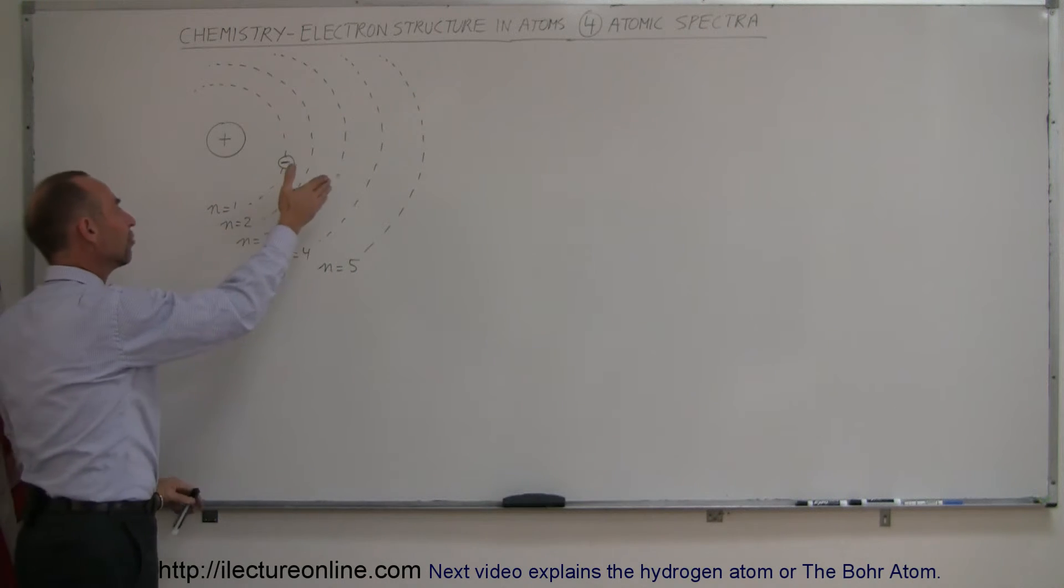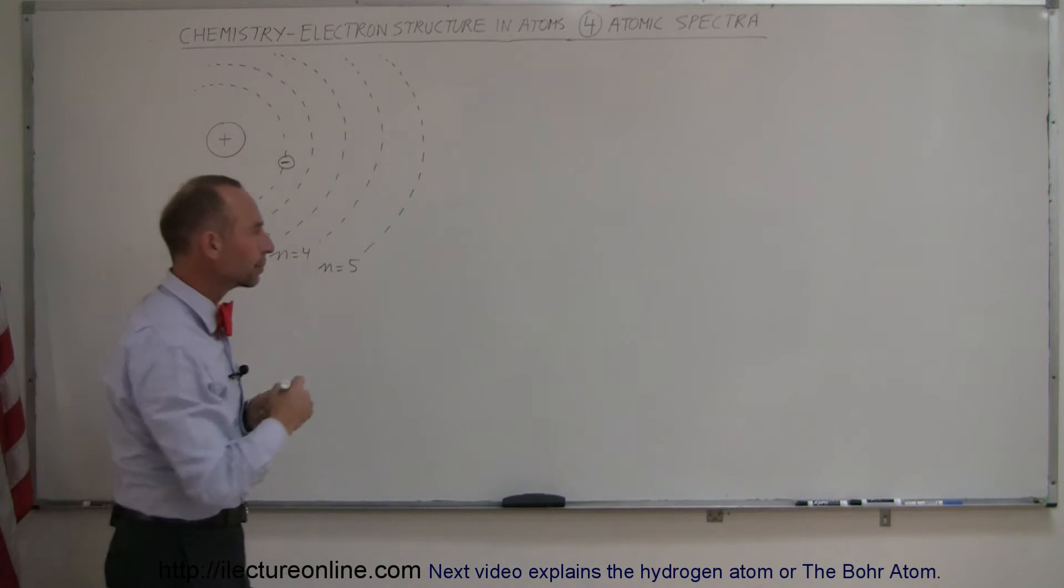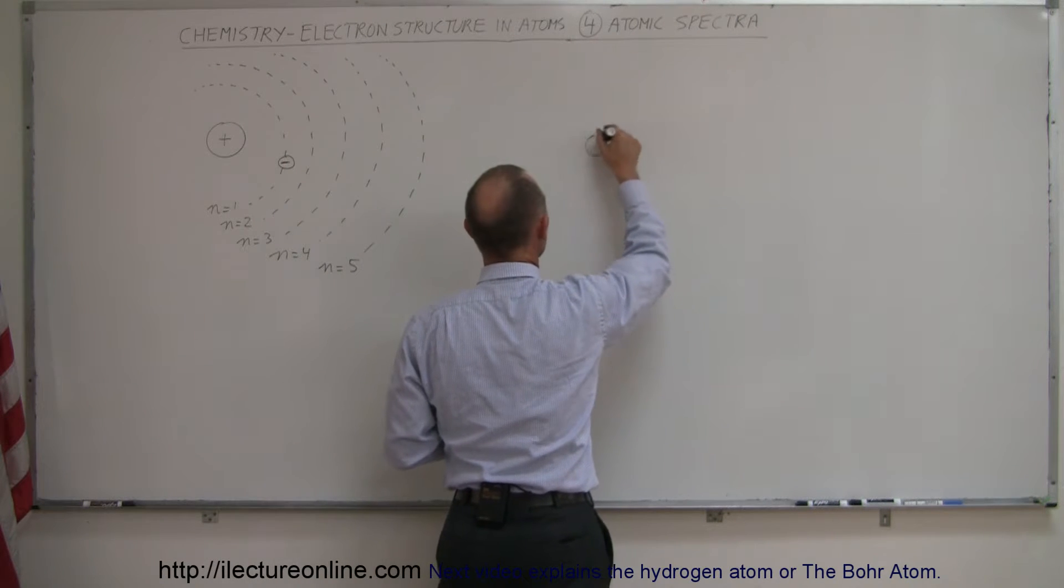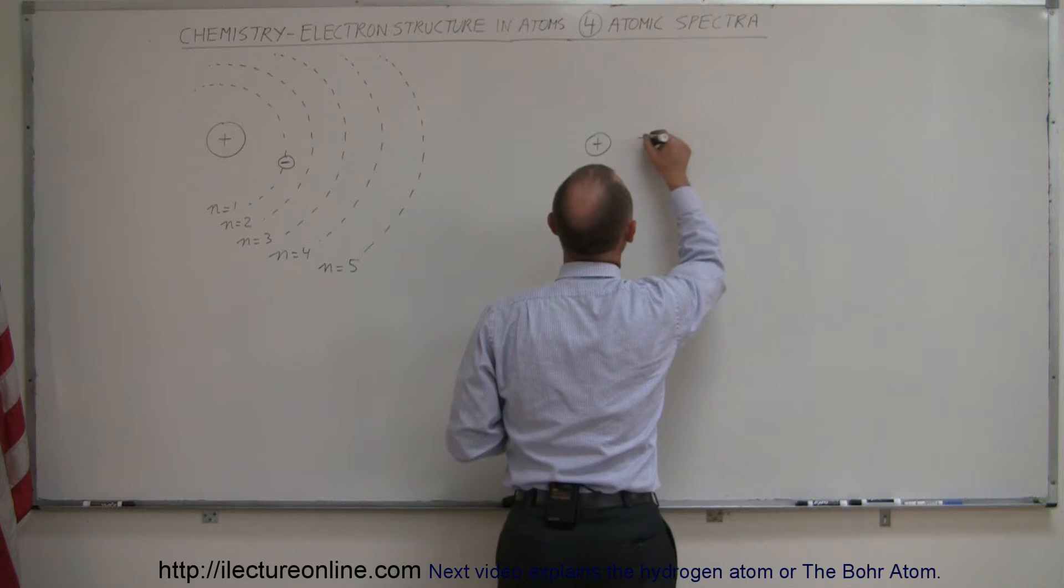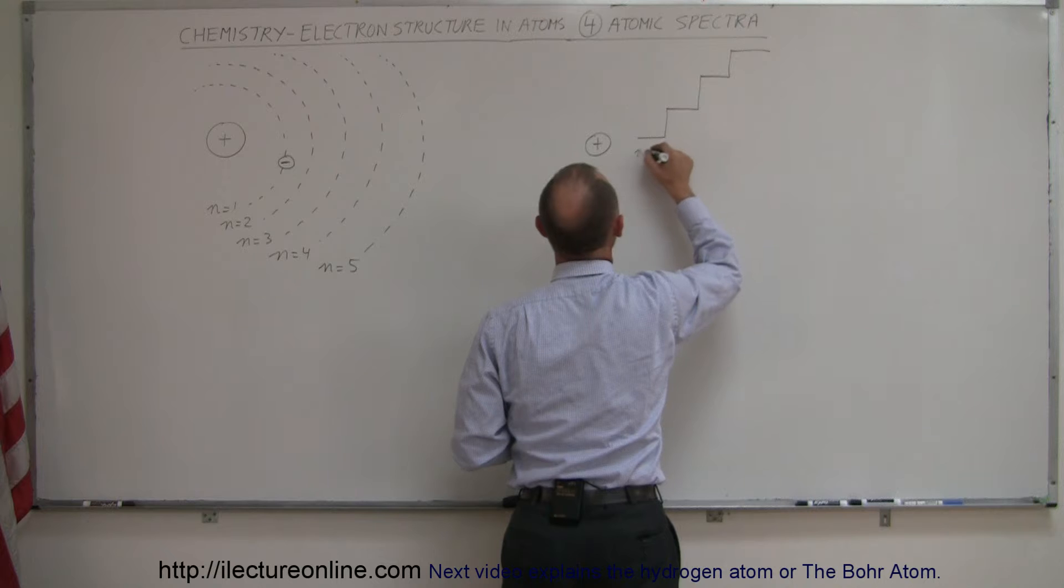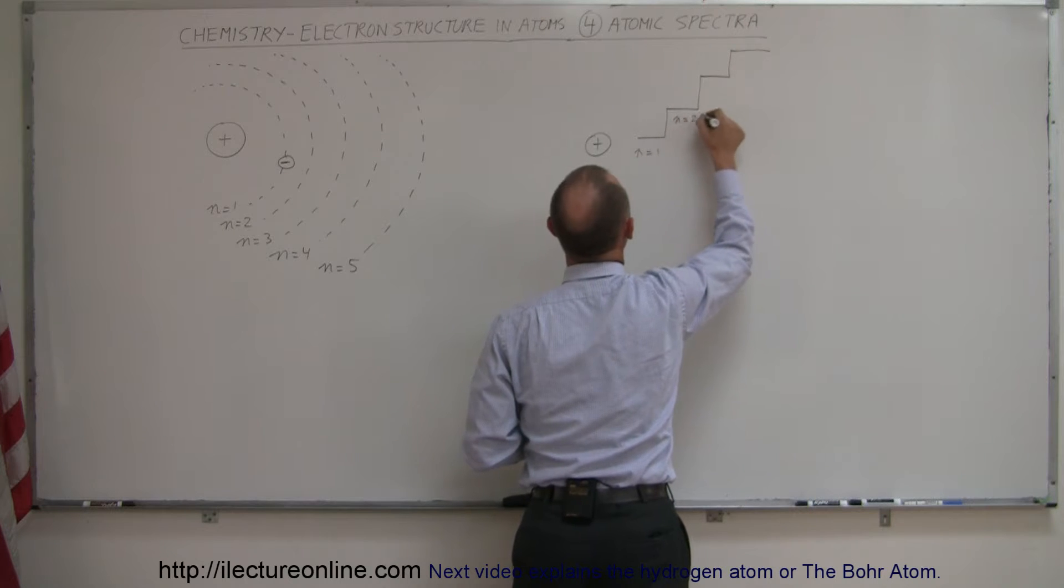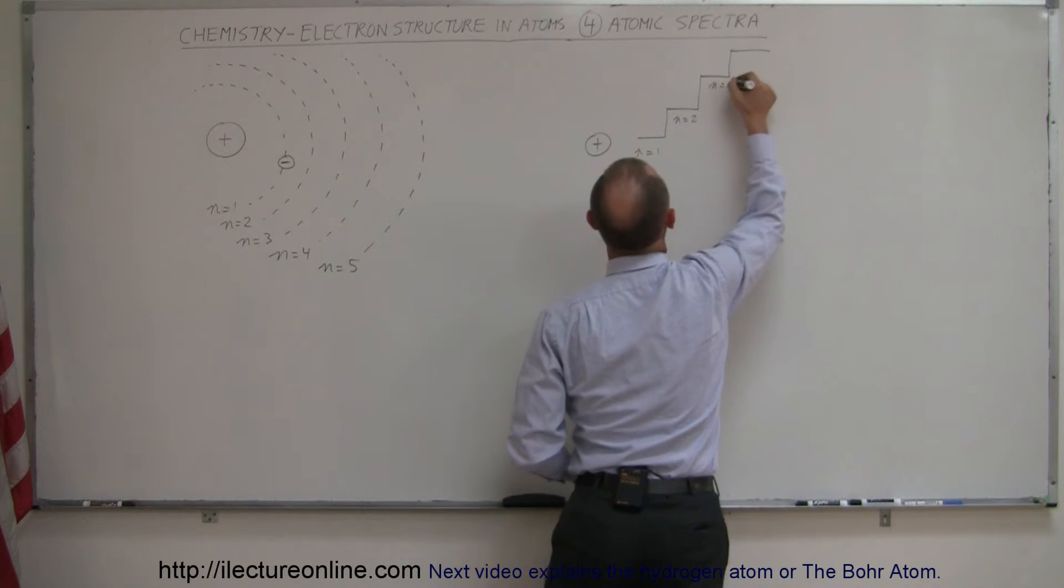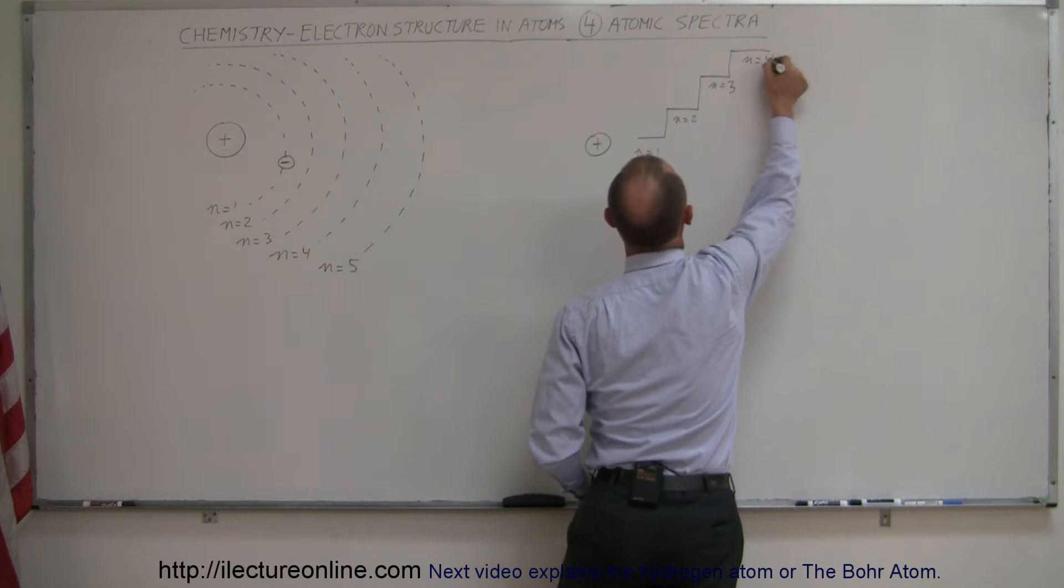So think of it as falling into a potential well. You can think of it maybe in terms like this. Here's the nucleus of the atom and then around it we have places where electrons can exist. This is the n equals one level, the n equals two level, the n equals three level, the n equals four level and so forth.